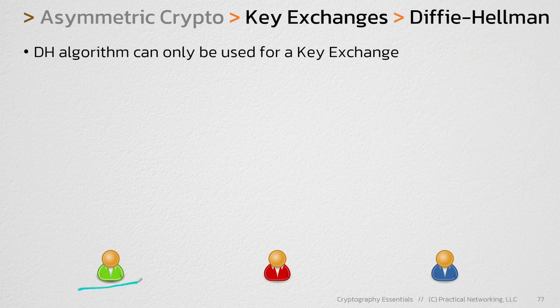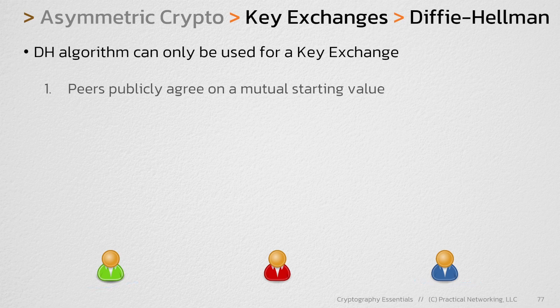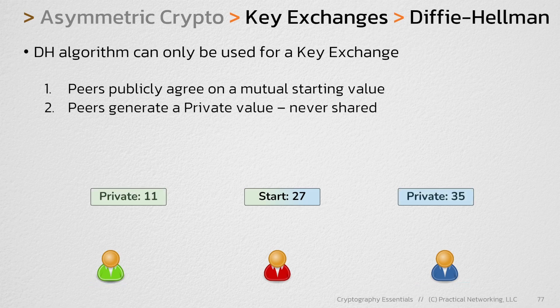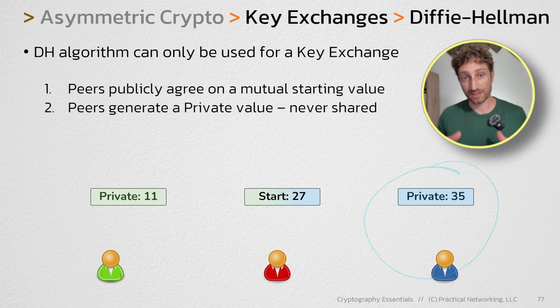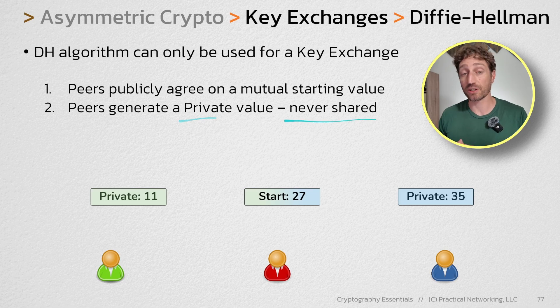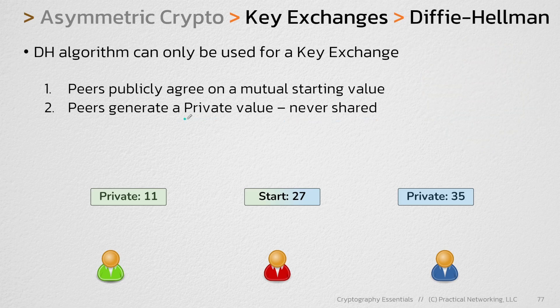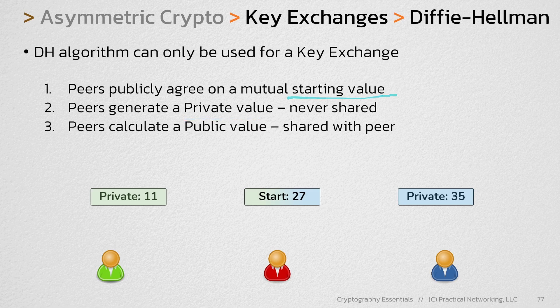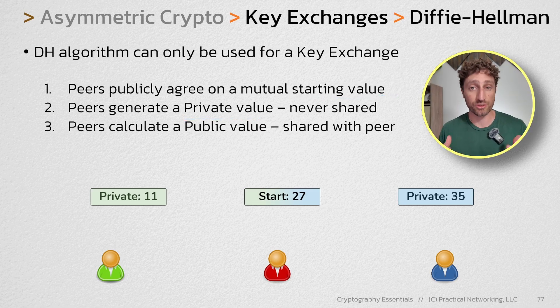What I'm about to show you is a simplified version of Diffie-Hellman between a green and blue user. It's going to start by both peers agreeing upon a mutual starting value. This is done publicly, so our red user gets a hold of this number as well. In our example, this starting value is going to be 27. Then our users are going to independently generate a private value — the green user generating 11 and the blue user generating 35. This private value is never going to be shared. Then our users are going to use that private value and the starting value to generate a public value. For our example, the combination is just going to use addition, but real Diffie-Hellman uses something a little bit more complex.